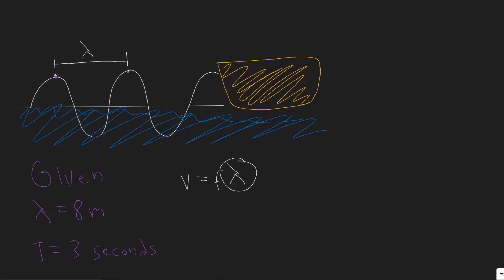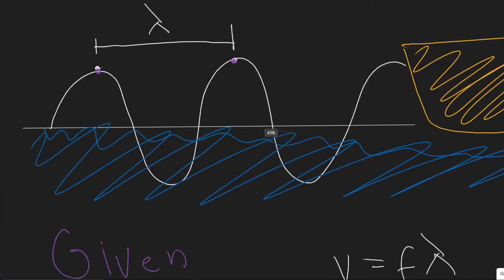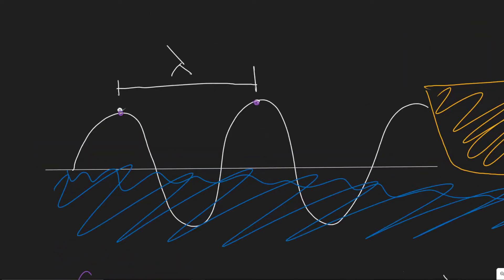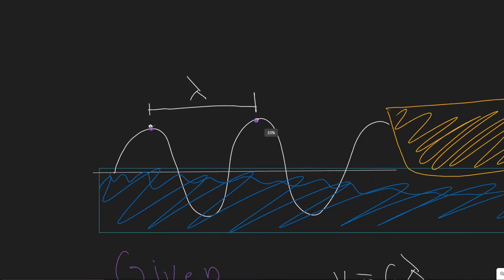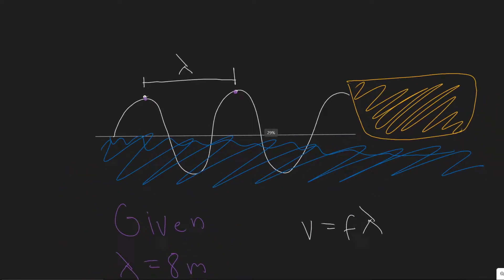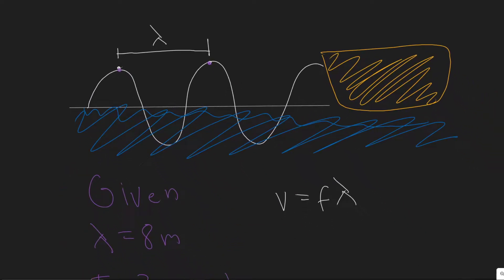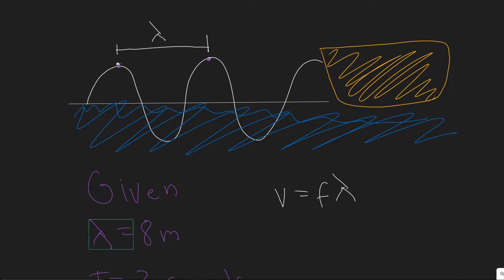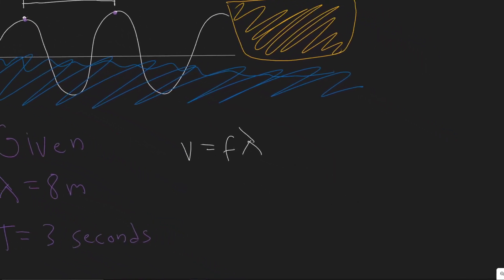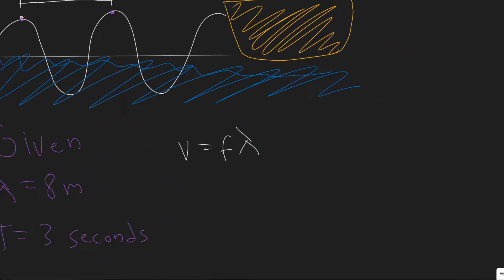Lambda is essentially the wavelength, and wavelength is the distance between the crests — basically the distance from here to there. They tell us the distance between the two crests of the wave is eight meters, so they're basically telling you lambda is eight meters.